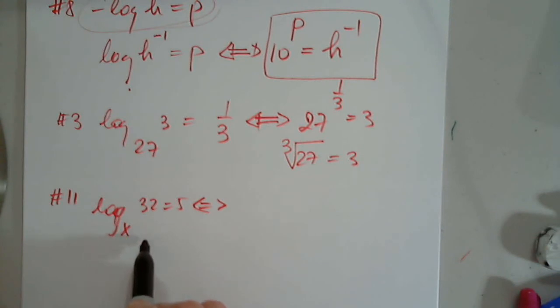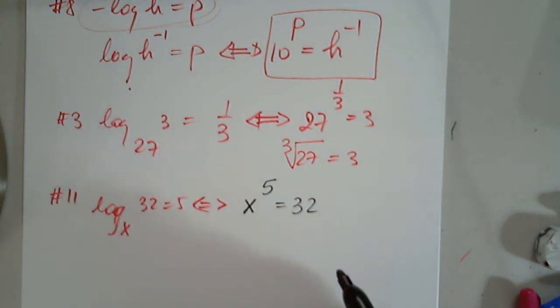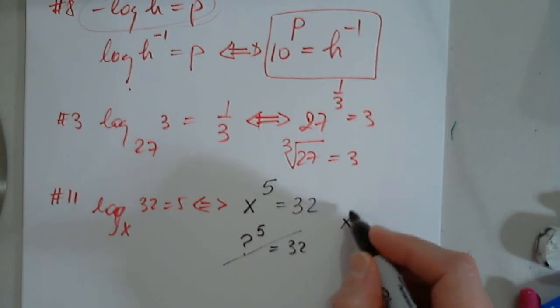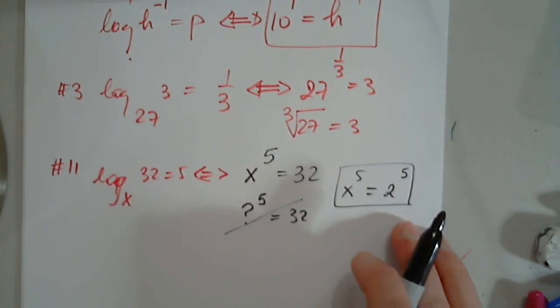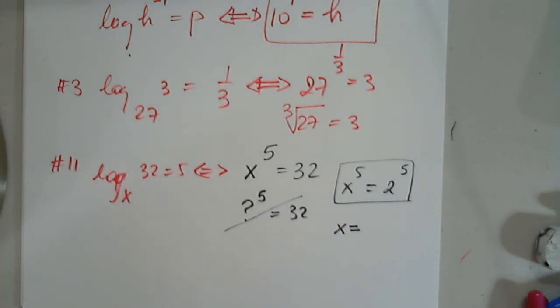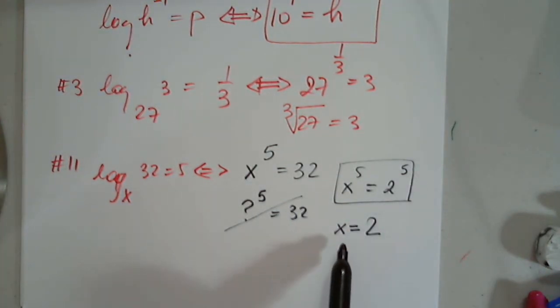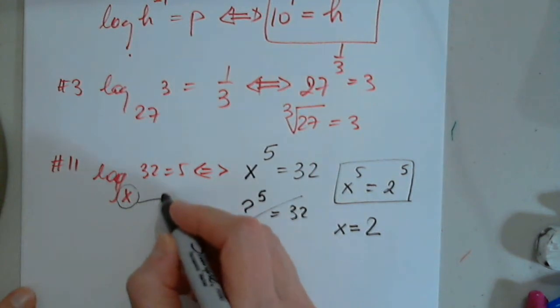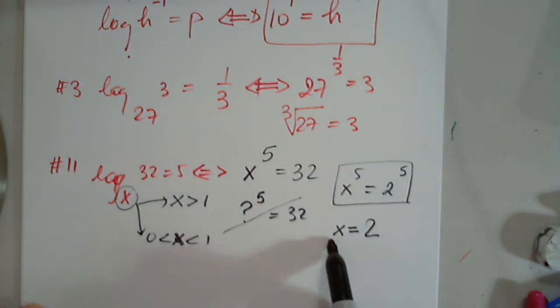We always start with the base and we go counterclockwise. So x to the fifth power equals 32. And now I can think. Is there a number I know that I raise to the fifth power and get 32? Or better, x to the fifth, I know that 32 is 2 to the fifth. How can these be equal in only one situation when x equals? Exactly 2. When x equals 2.